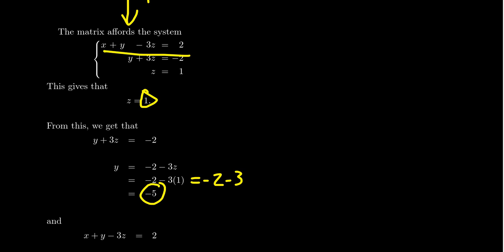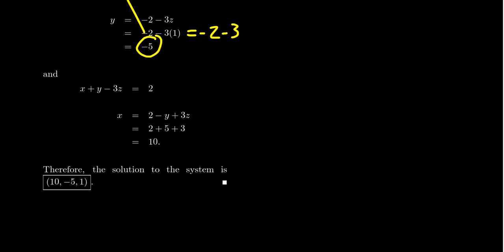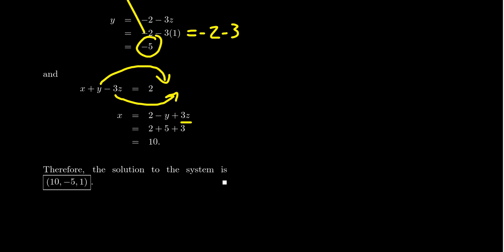Now look at the first equation: x + y − 3z = 2. We know z = 1 and y = −5, so substituting those values in leaves only x unknown. Moving y and z to the other side: x = 2 − y + 3z = 2 − (−5) + 3(1) = 2 + 5 + 3 = 10. So x = 10. All together, x = 10, y = −5, z = 1, giving us the unique solution to this system of equations.